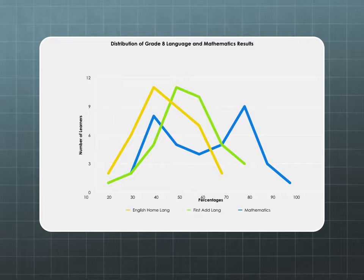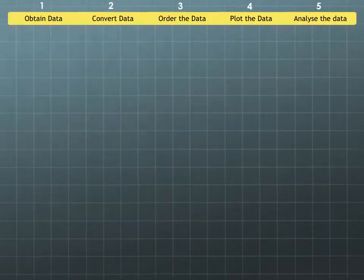Let's go through the process of using the bell curve to analyze the data. There are five key steps: we first obtain the data, then we convert it if necessary, we order it if necessary, then we plot the data, and then we analyze it. It's important to go through those five steps.